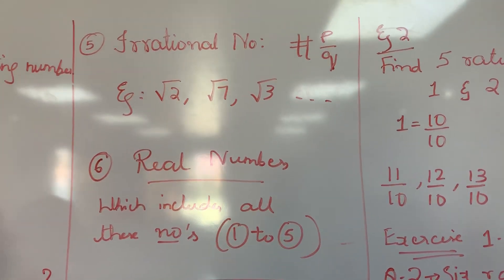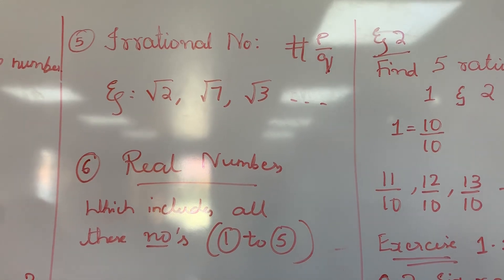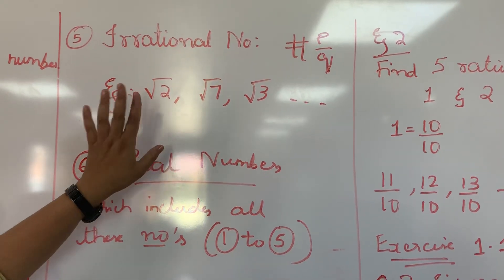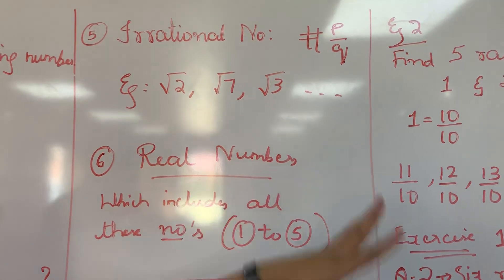Now next is irrational number. Irrational numbers are the numbers which cannot be written in the form of P by Q. Like all roots. Perfect square will not come in this. So root 2, root 7, root 3, like that it goes.